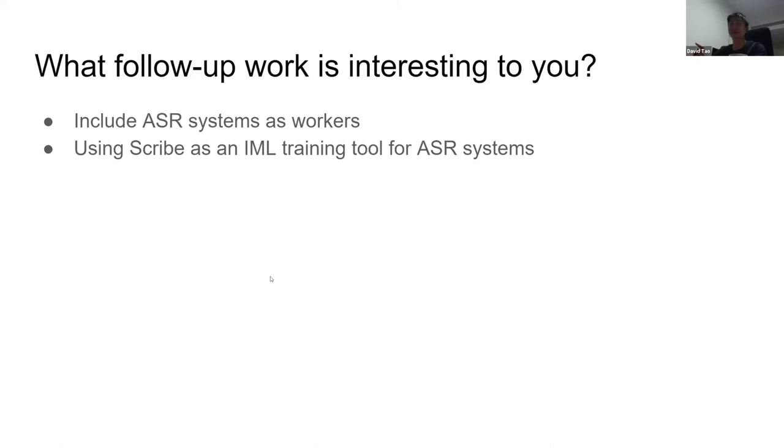There wasn't much ML in the Scribe system — it wouldn't even really be called an IML paper. You could call it human computation or crowdsourcing, definitely not interactive machine learning. But there are lots of opportunities to use machine learning that will likely be built upon in the next two papers. Also worth noting: the first paper's first author is Walter and the advisor Jeffrey is the last author — Jeffrey is also the last author on the third paper.